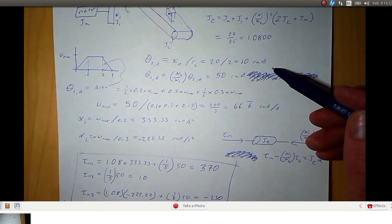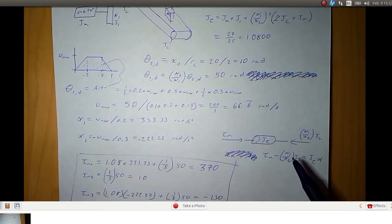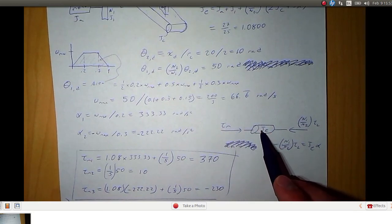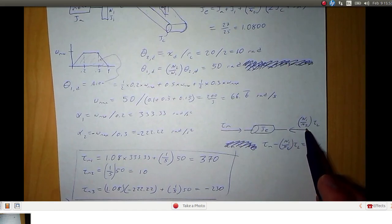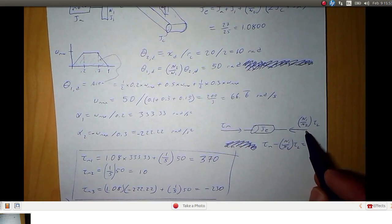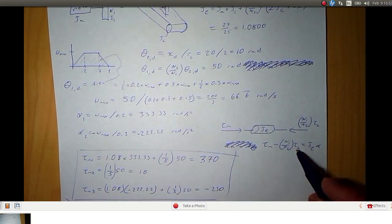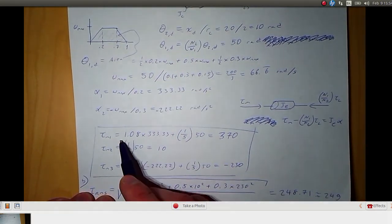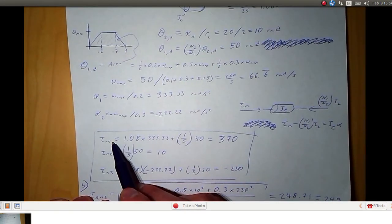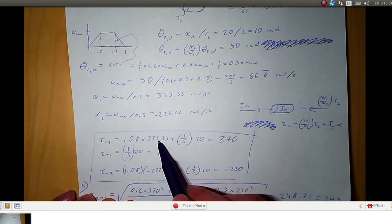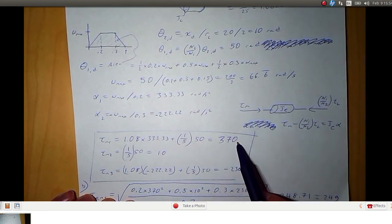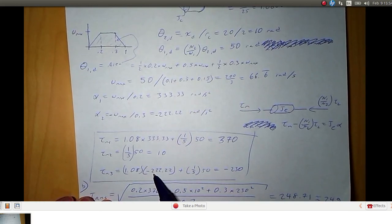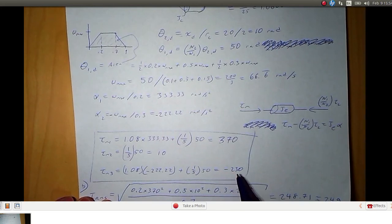Now we have the moment of inertia, effective moment of inertia JE, and we have the acceleration so we can get the torques by applying Newton's second law to this rotational system. Here's a free body diagram. We have the motor torque going one way, the mass moment of inertia, and torque opposing it going the other way, but that's divided by the gear ratio. So our force balance equation: we have motor torque minus N_1 over N_2 times tau_L is equal to this moment of inertia times acceleration. We'll just write that equation, substitute the values for the three cases. So we have tau_M1, we have 1.08 which is JE times alpha 1 plus 1 over 5 times 50 so we get 370. For tau_M2, alpha is 0 so we just get 10. Tau_M3, here we have negative 222 for the acceleration so we end up with negative 230 for that torque.